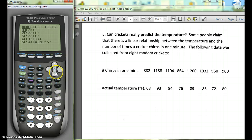We're going to go stat, over to calc, and we're going to choose linreg number 4, ax plus b. Now if you don't see this, it's okay. You'll just hit enter.